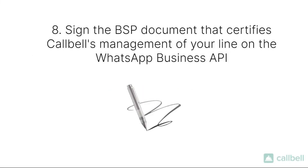As a last step, we will share with you a document that, sent by the BSP and required by WhatsApp, certifies that your business is aware that the messaging activity of your WhatsApp Business API account will be managed through the Callbell platform. You will be able to digitally sign the document via a couple of clicks using DocuSign. Once you have signed it, you will receive a confirmation email and will be able to download a copy of the document in PDF directly on your computer.